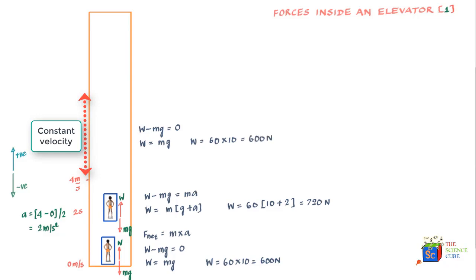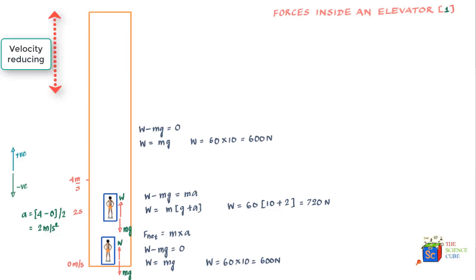When velocity is constant there is no acceleration, so your weight is the same as when you are stationary. You can relate to this: after the initial acceleration from the ground floor, you feel increased weight, but once velocity becomes constant, you again feel your normal weight. The third phase begins as the velocity starts reducing — approaching the top floor, velocity decreases from 4 meters per second to 0 meters per second.